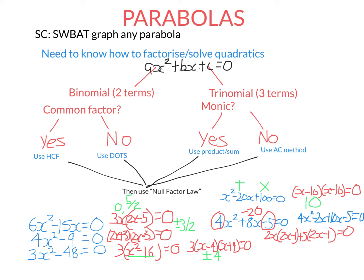After doing this step, you should find that there is a bracket in common. We can view this as two terms that share a common factor of 2x minus 1. So we write that common factor out the front and ask: what do I times this by to get the first term? That's 2x. What gives the second term? That's positive 5.